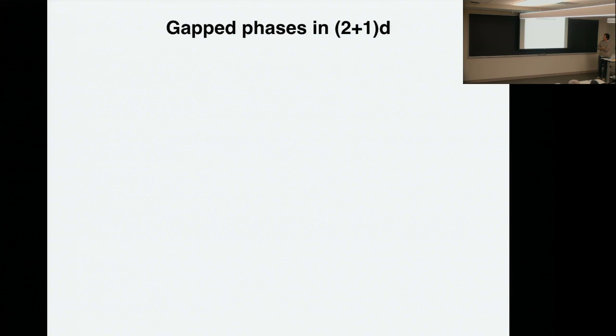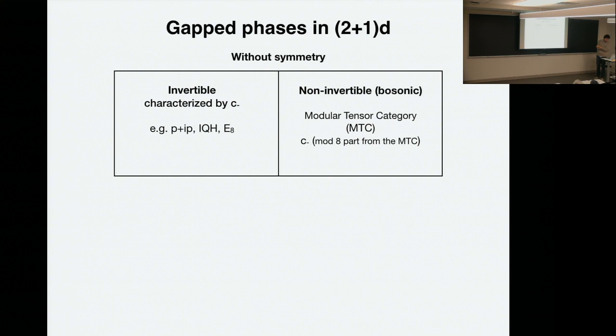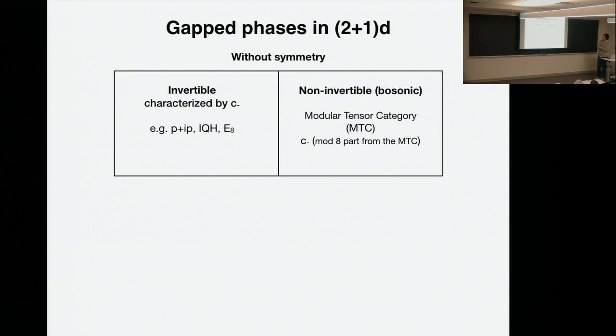In recent years, we have made a lot of progress classifying gapped phases in various dimensions. I think there's kind of a consensus, at least within the framework of quantum field theory, we have an answer to this question of invertible phases. So broadly, we can divide all the gapped phases into invertible ones and non-invertible ones. Since I'm going to just talk about low-dimensional systems, this is only what we know in 2+1.